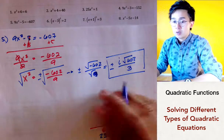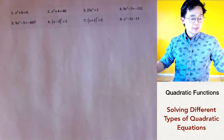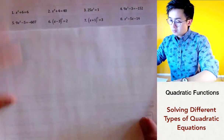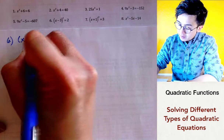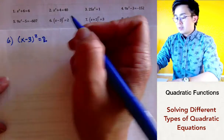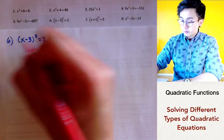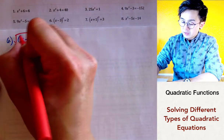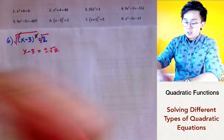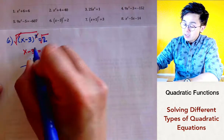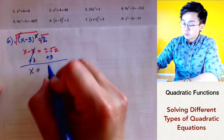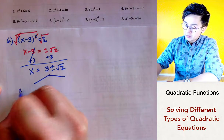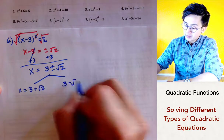Those are the two solutions for problem number five. For problem number six, we have x minus 3, quantity squared, equal to 2. The first step is to take the square root of both sides to eliminate the exponent, giving us x minus 3 equals plus or minus the square root of 2. The square and the square root cancel as inverses. Adding 3 on both sides, and since 3 cannot be combined with square root of 2, we write x equals 3 plus or minus square root of 2. The two solutions are 3 plus square root of 2 and 3 minus square root of 2.